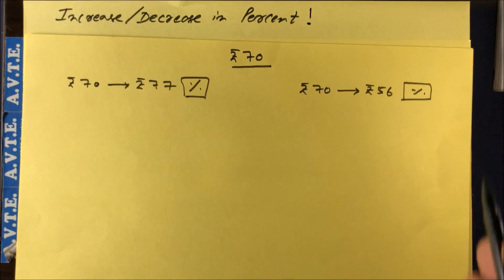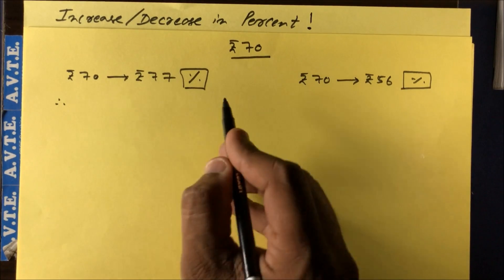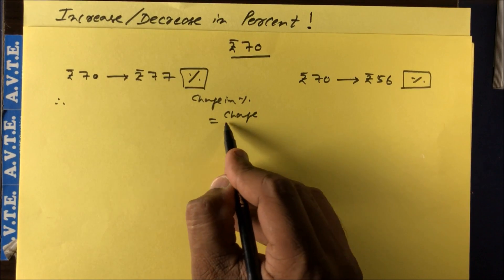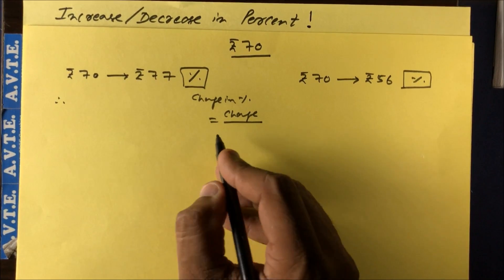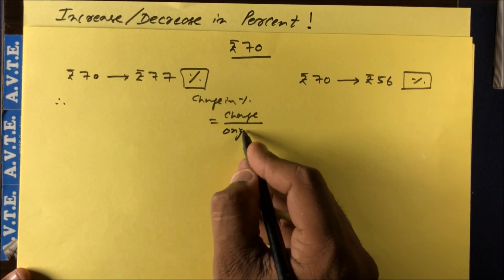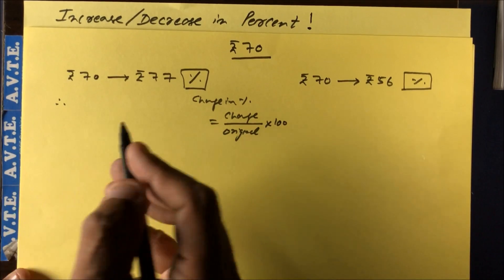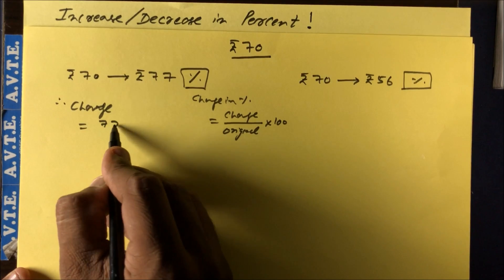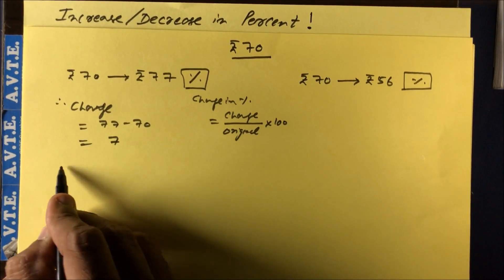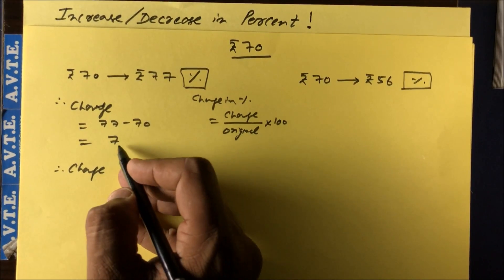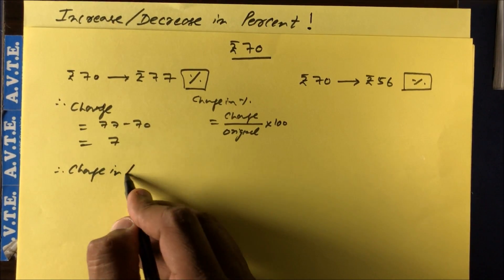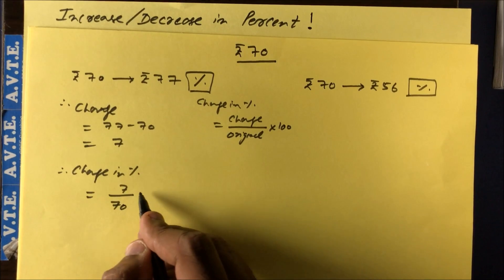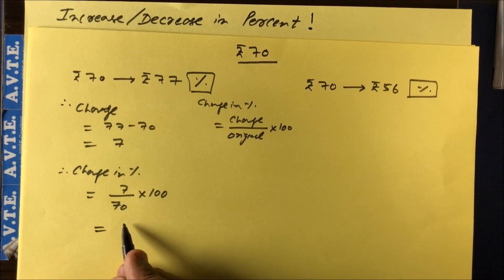The formula is: change in percentage equals change upon original, into hundred. First we find the change: 77 minus 70 is 7. So this 7 is the increase. Change in percent is 7 upon original — original means from where we are comparing.